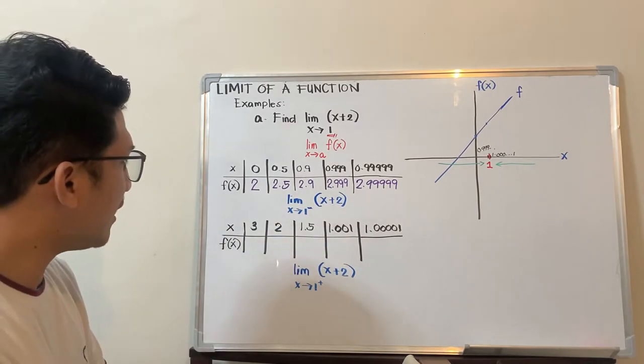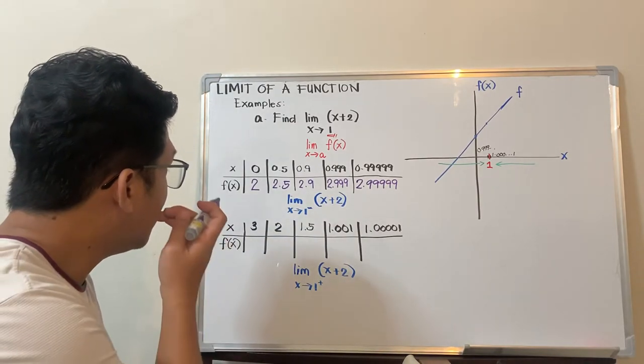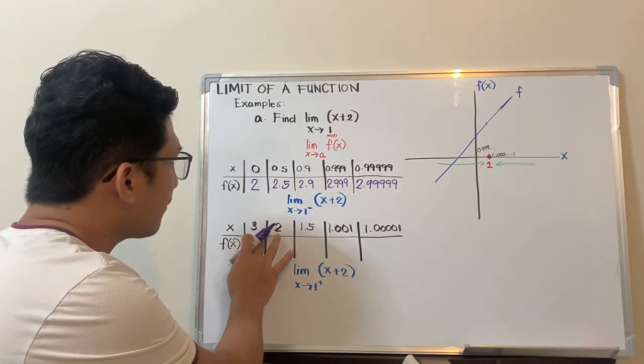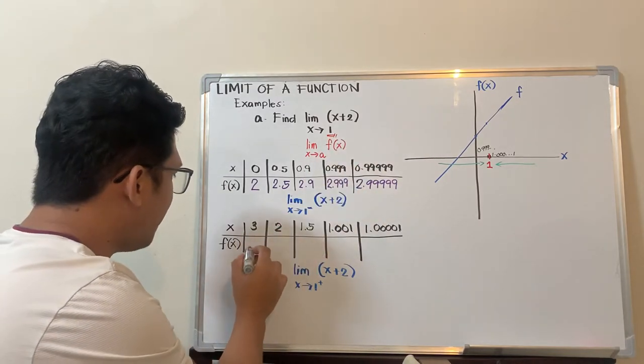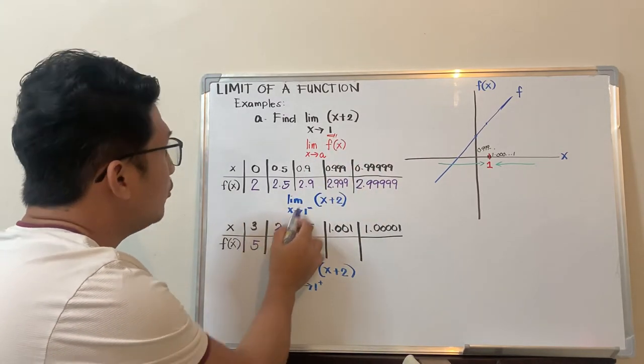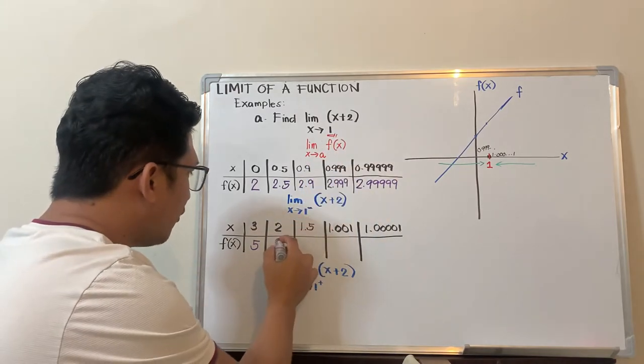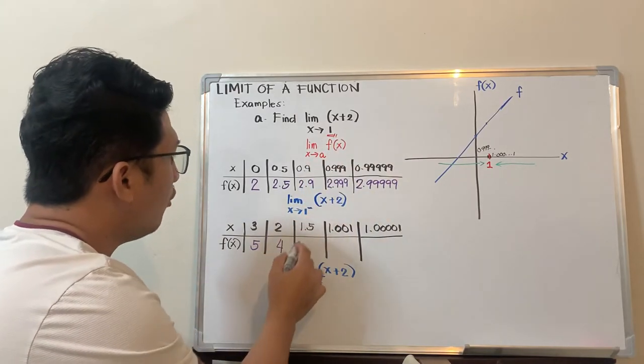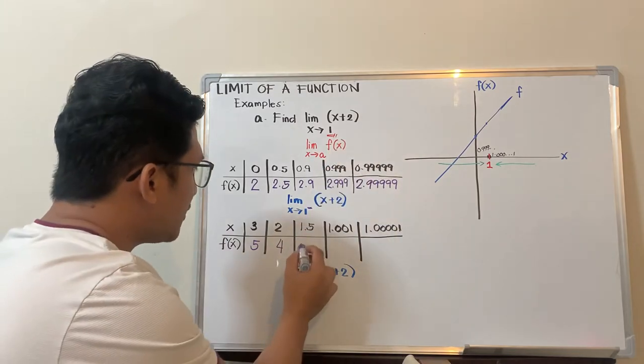For the right side, substitute 3 plus 2—that should be 5. Then 2 plus 2, that should be 4. 1.5 plus 2 is 3.5.